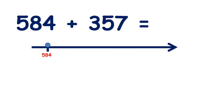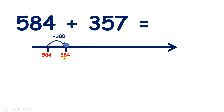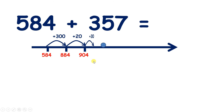Now pause the video and see if you can add three hundred and fifty-seven to five hundred and eighty-four. So if we have five hundreds and we add three hundreds, we get eight hundred, and of course we still have our eighty-four. Now we need to add five tens. Rather than adding five tens all in one go, if we add two tens, that takes us to our next hundred — nine hundred and four. And now we can add three more tens to get to nine hundred and thirty-four.